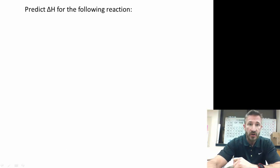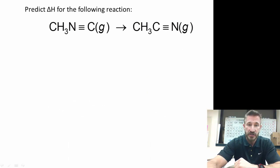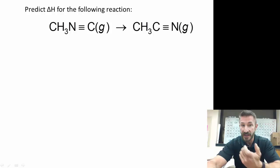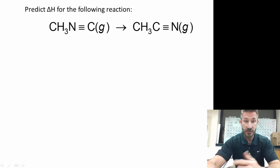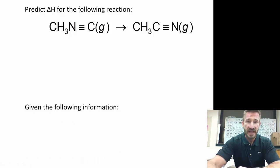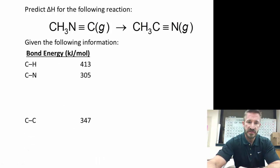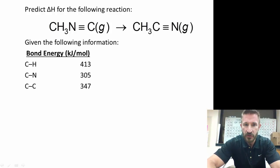One final problem. Predict the delta H for the following reaction. Now for this one, we have CH3N triple bonded to carbon, form CH3C triple bonded to nitrogen. And then we can look at the table. We're given all this information about these different substances. But this one, there's actually a shortcut. Now first, we want to draw these. So if you look at, we have a carbon bonded to three hydrogens. And then that is single bonded to nitrogen. Then that nitrogen is triple bonded to a carbon.